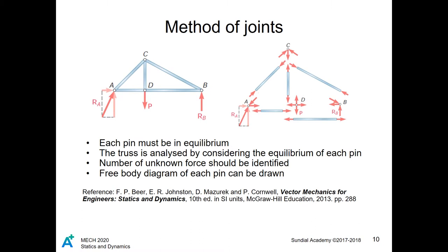The first method of truss analysis that we will cover is the method of joints. The method of joints uses the fact that every part of the structure must be in static equilibrium to solve the entire truss structure, pin vertex by pin vertex. First, the reaction forces at the base are found based on the loading. Then, we construct free body diagrams at every vertex, starting from the bases where the reaction forces are known, and solve the forces in each beam by solving the free body diagrams at each pin vertex, and moving to an adjacent unsolved vertex with the knowledge of the previous pin vertex.